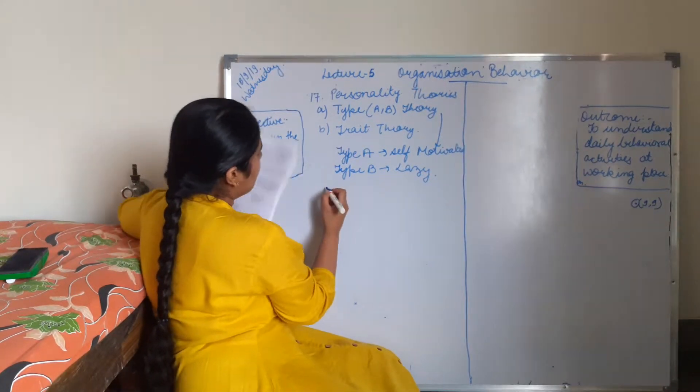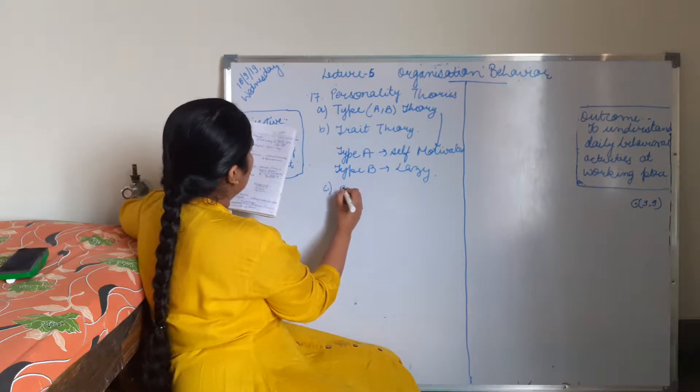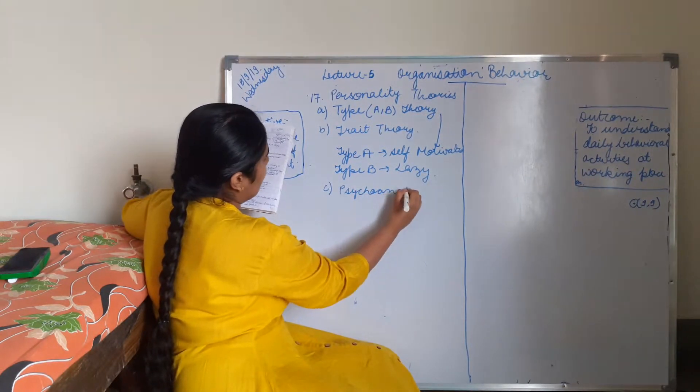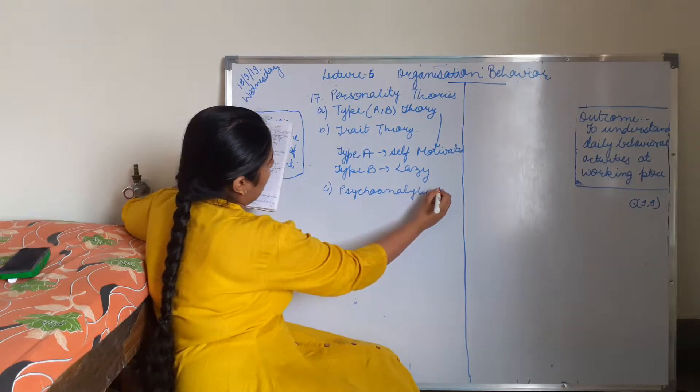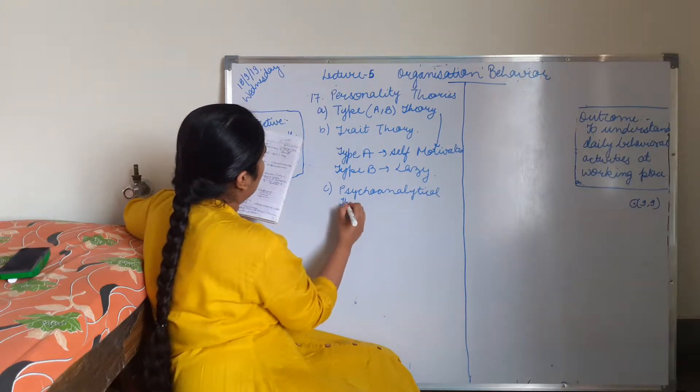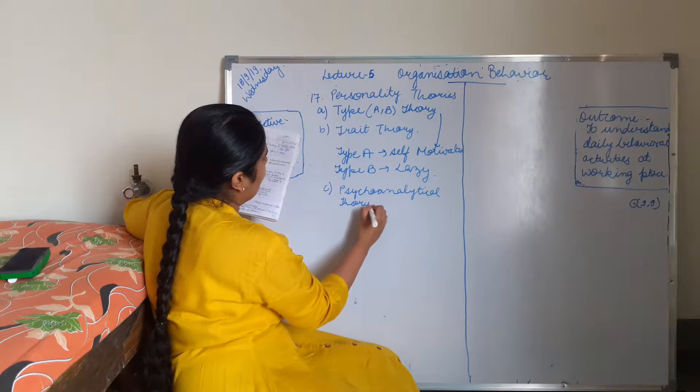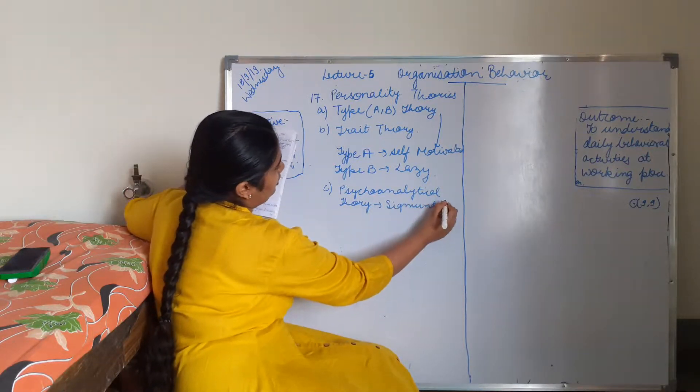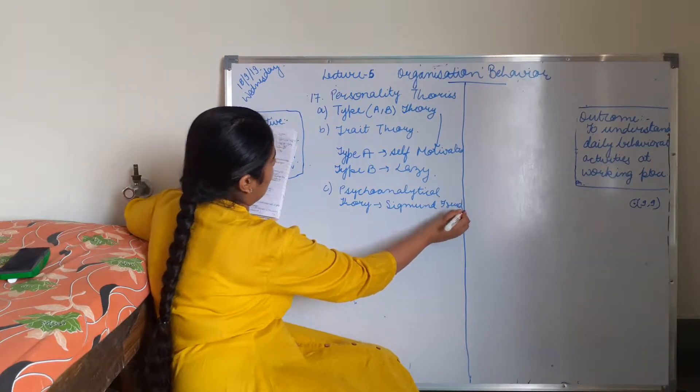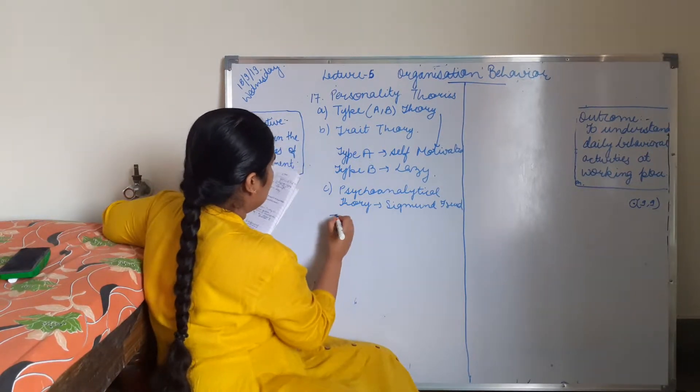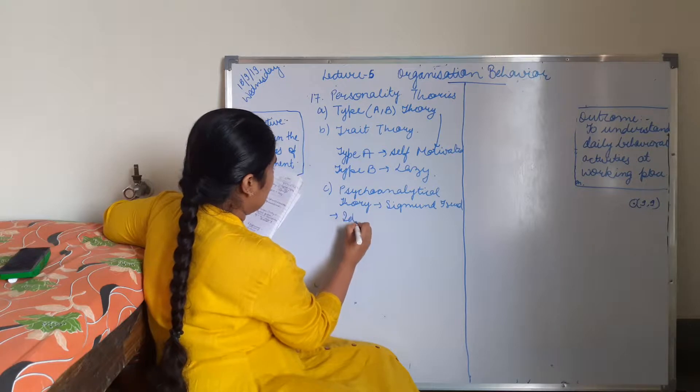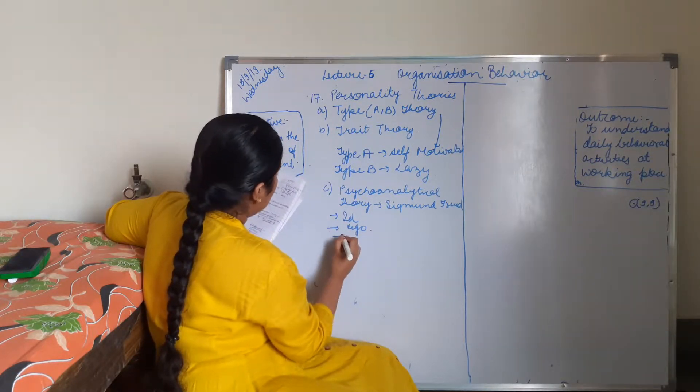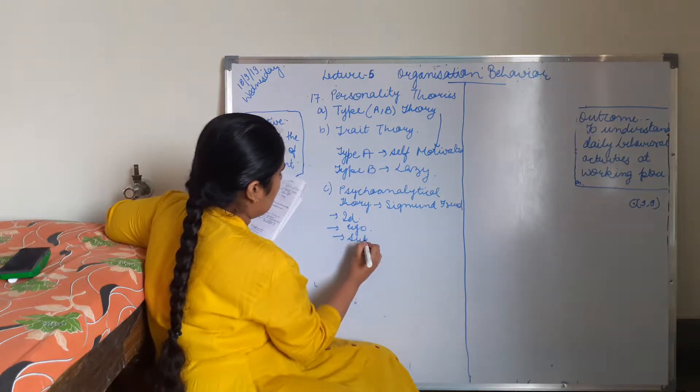And C is Psychoanalytical, given by Sigmund Freud. In it, A is Id, B is Ego, and C is Super Ego.